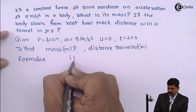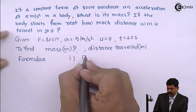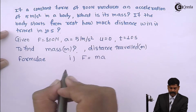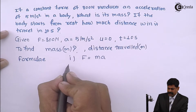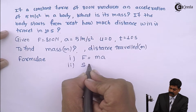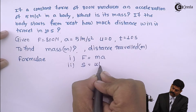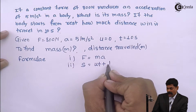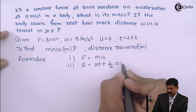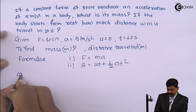The formulas we will use: first, to calculate mass, F equals ma. Second formula we will use: s equals ut plus half at squared.